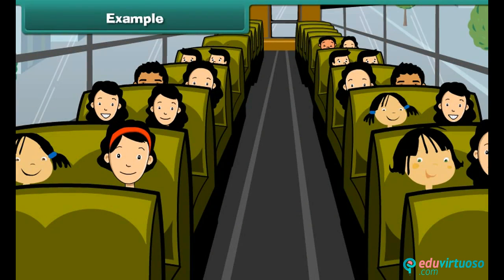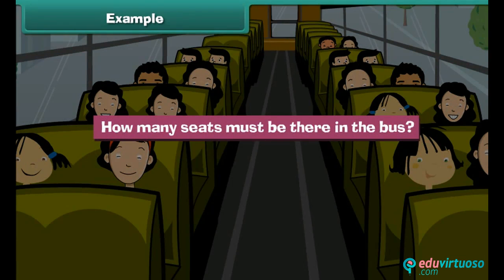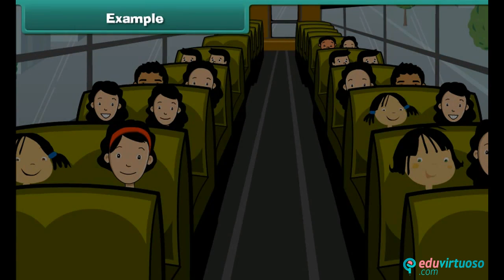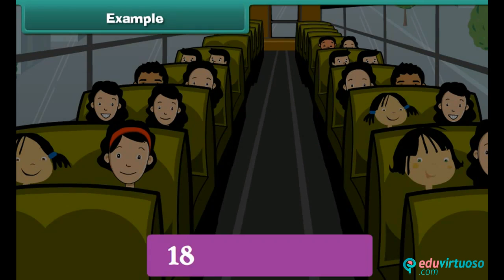Example: 18 girls have to be seated in a bus, and 2 girls can sit in a single seat. How many seats must there be? Divide the girls into groups of 2 — there are 9 groups, so there must be 9 seats in the bus. We can write this as 18 divided by 2 is equal to 9.